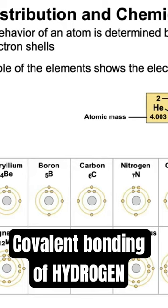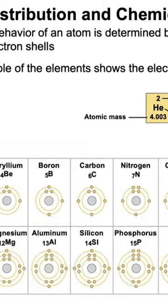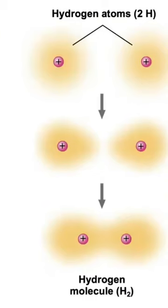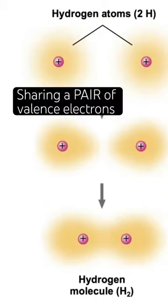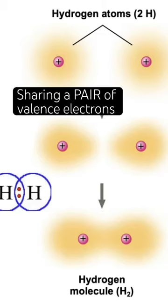This energy shell needs two to be full, so each hydrogen needs one more electron to satisfy the octet rule. To form the covalent bond, each hydrogen shares its one electron with the other hydrogen.